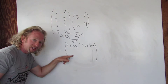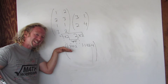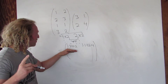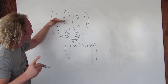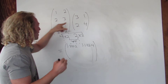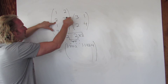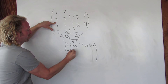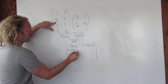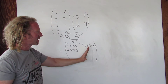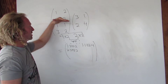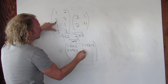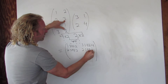Now for the second row, first column, we use the second row and the first column: two times three plus three times two. For the second row, second column, we use the second row and the second column: two times one plus three times four.